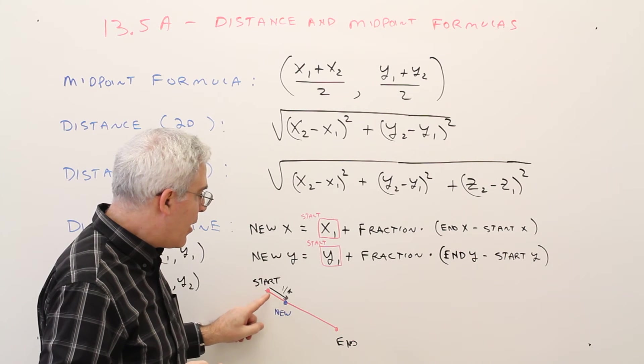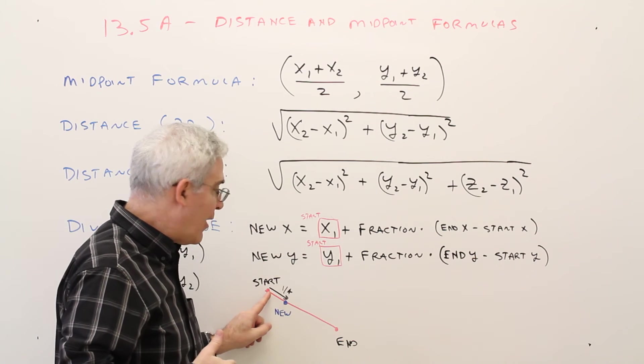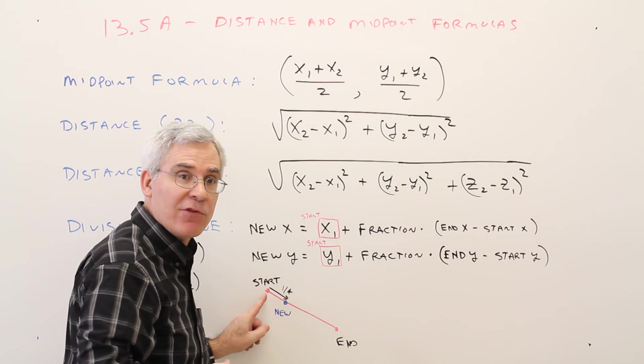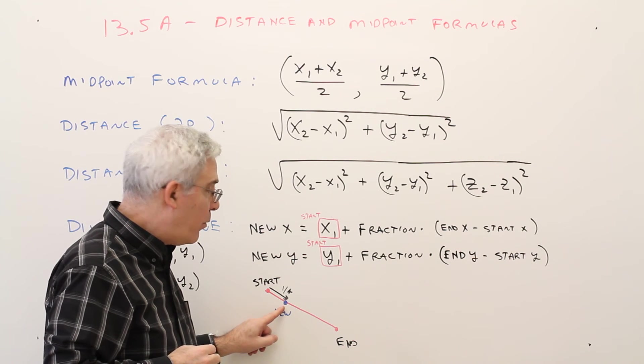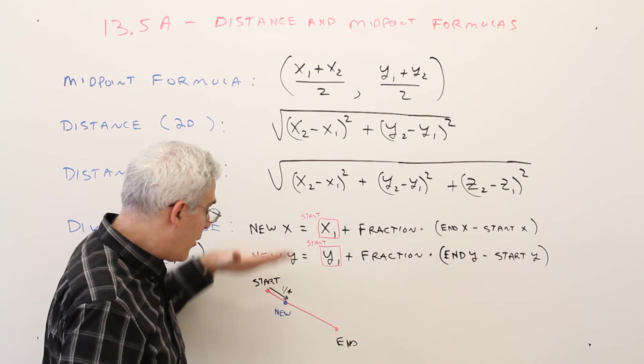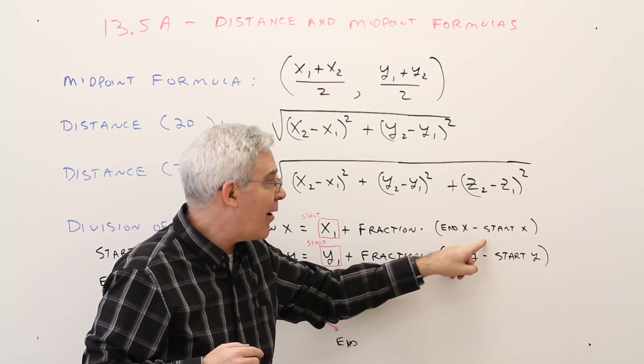So for this example here, my new x-coordinate will be larger than my starting x-coordinate because I'm going in the positive x-direction. However, my new y-coordinate will be less than my starting y-coordinate because I'm going in the negative y-direction.